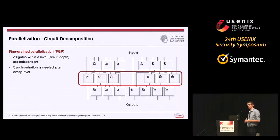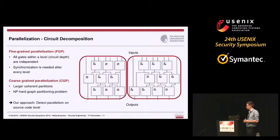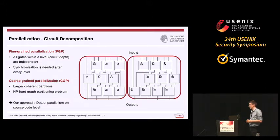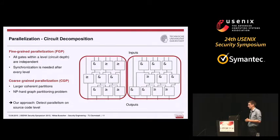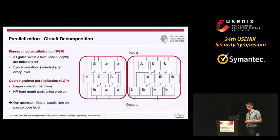The drawback of fine-grained parallelization is that you need to synchronize between multiple levels, making you dependent on the shape of your circuit. It would be preferable to detect larger coherent partitions of gates, requiring less synchronization for more efficient parallelization. Unfortunately, finding such partitions in a circuit is known to be NP-hard. So our approach is to identify parallelism at the source code level and track it throughout the compilation process into the circuit.